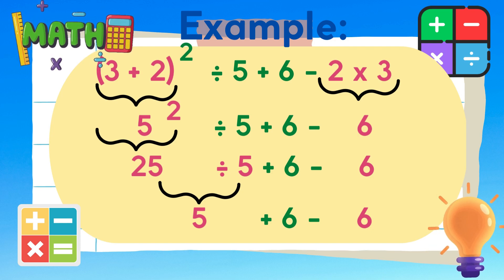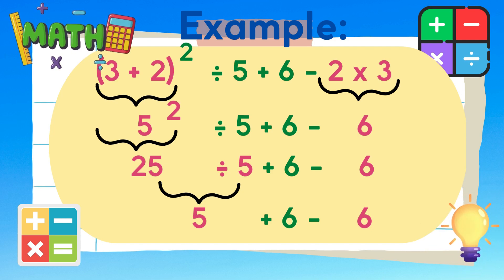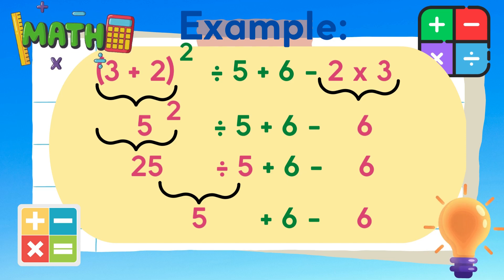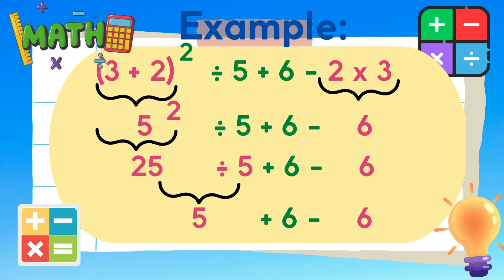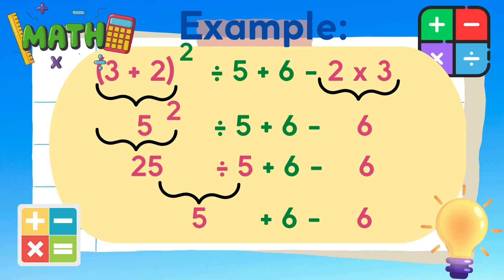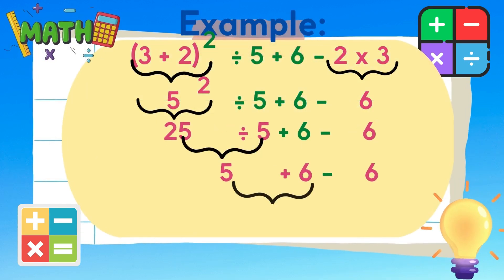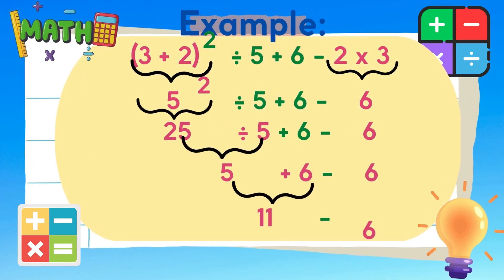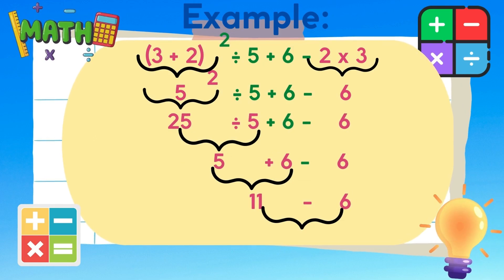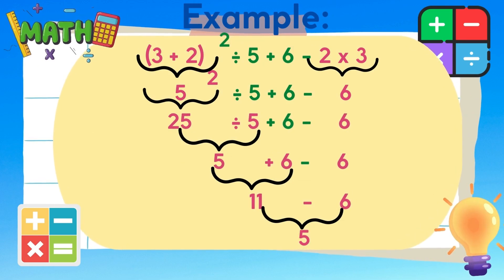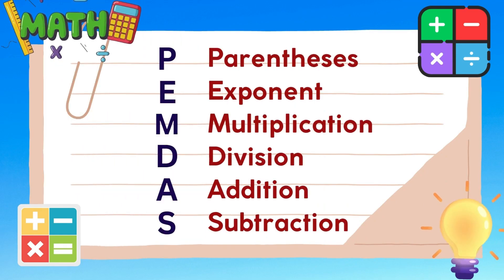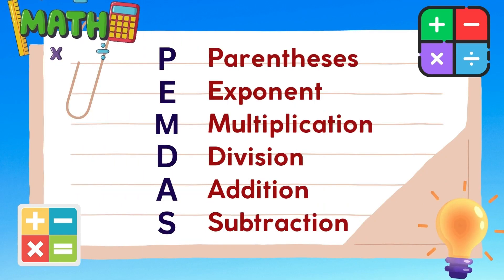We need to perform the operations of addition and subtraction, whichever comes first from the left. So, 5 plus 6 is equal to 11. Then, finally, 11 minus 6 is equal to 5. This example follows the PEMDAS rule.